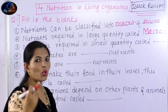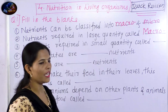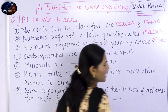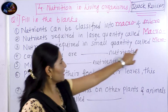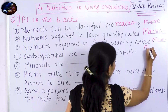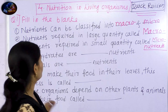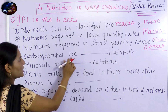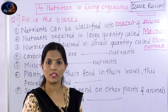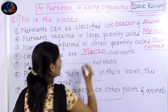Macronutrients are nutrients required in a large quantity. Micronutrients are nutrients required in a small quantity. Carbohydrates, proteins, and fats are macronutrients — that is clear.